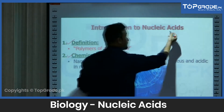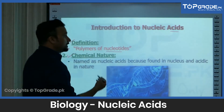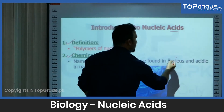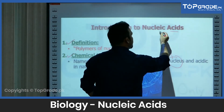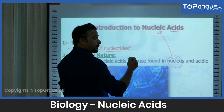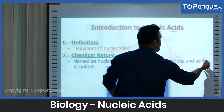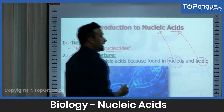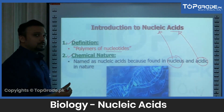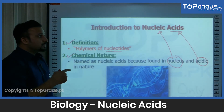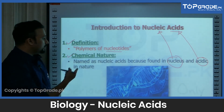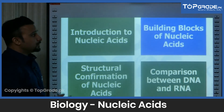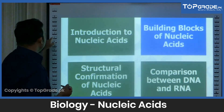You can see in here they are acids, so chemically yeh acidic hain. So named as nucleic acids because they are found in nucleus — that's why we say they are 'nucleic', means pertaining to nucleus. And as they have got the acidic nature, that's why we call them acids. So nucleic acids are related to nucleus and acidic in nature. Now let's talk about the building blocks of the nucleic acid.